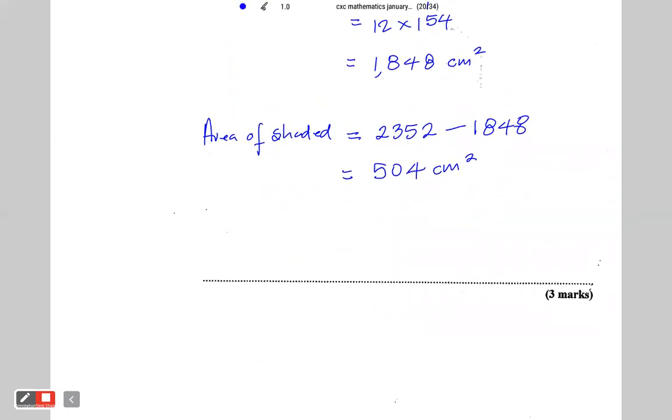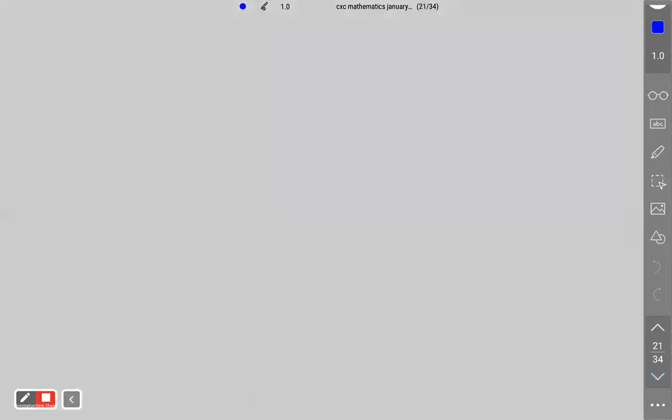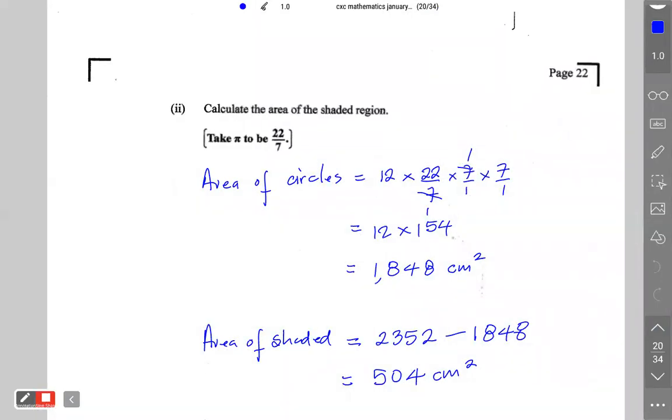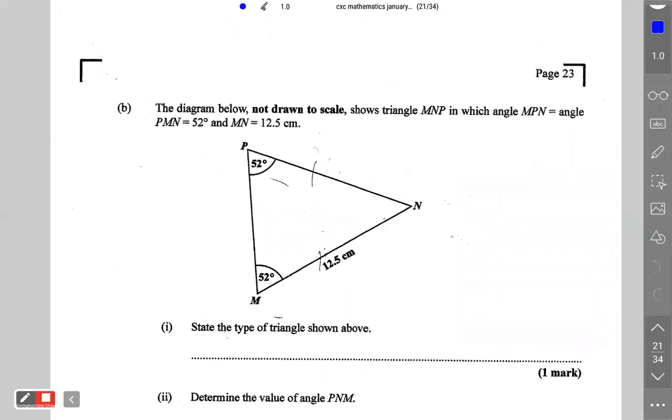Continuing. Alright, next page. This says the diagram below not drawn to scale shows triangle MNP in which angle MPN is equal to angle PMN is equal to 52 degrees and the length of MN is 12.5 centimeters.